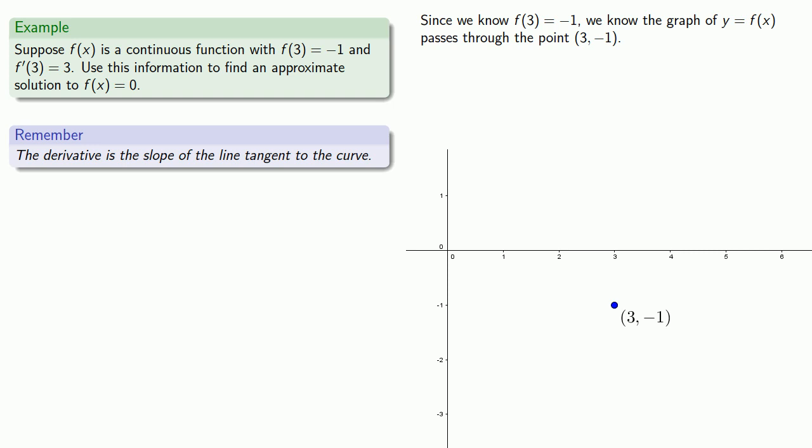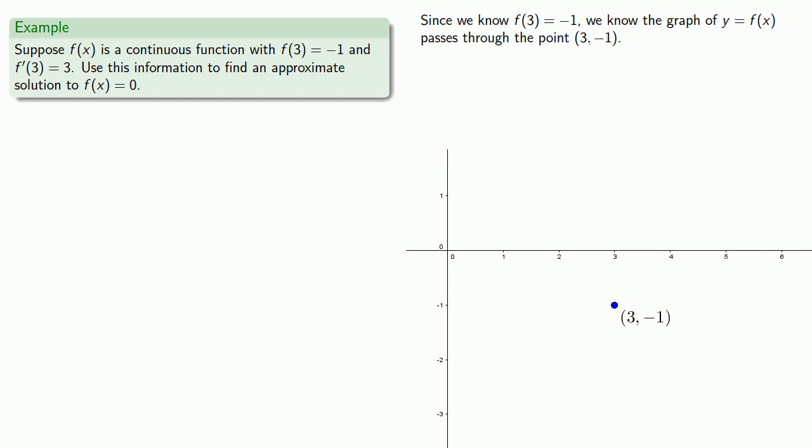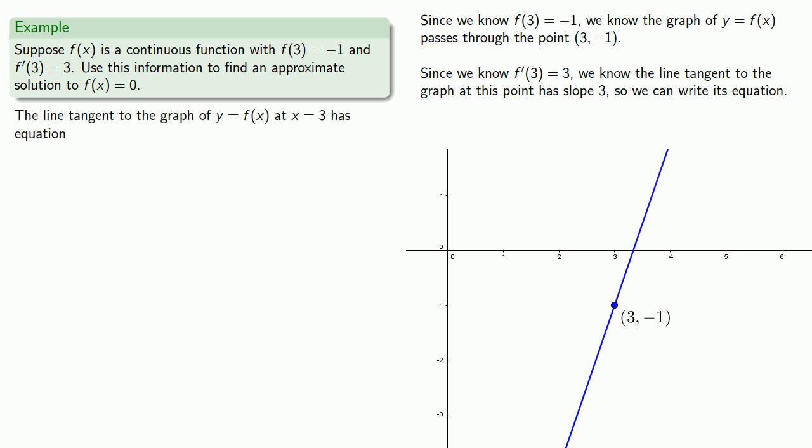Since we know f'(3) = 3, we know the line tangent to the graph at this point has slope 3, and so that means we can write the equation of the tangent line.